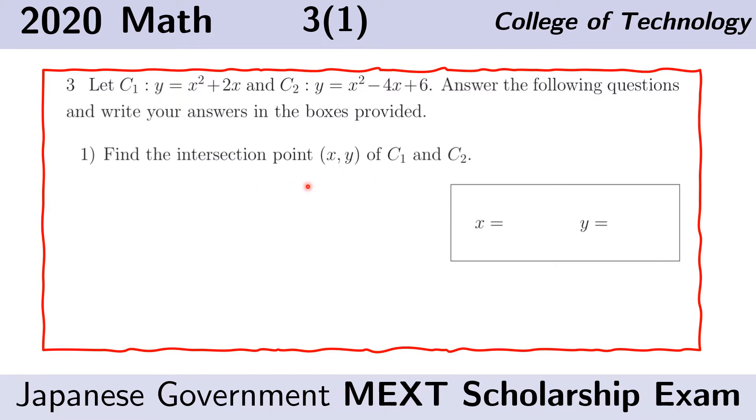The intersection point of any two curves is the point that satisfies both equations. We need to solve this system of equations. The first equation is given by C sub 1 and the second equation is that given by C sub 2.